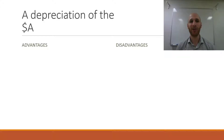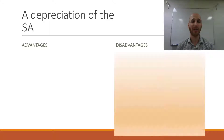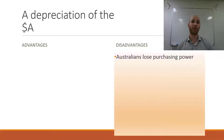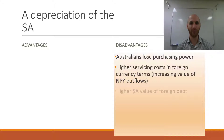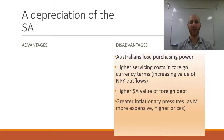Let's flip the script to a depreciation of the Australian dollar. When the Australian dollar goes down, what is the impact on the economy? Starting with the disadvantages: a lower Australian dollar means Australians lose purchasing power — they can buy fewer imports with a given amount of Australian dollars. There are also higher servicing costs in foreign currency terms because the Australian dollar is weaker, which will increase the Australian dollar value of servicing costs. Foreign debt will be higher in Australian dollar terms. There will also be greater inflationary pressures as imports are more expensive with a lower currency, leading to higher prices, bumping up the CPI and inflation.